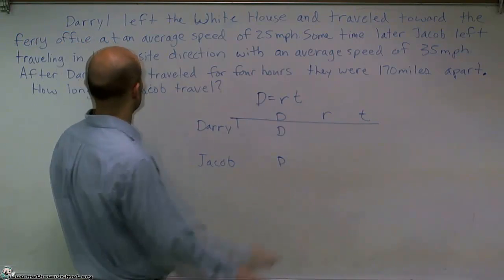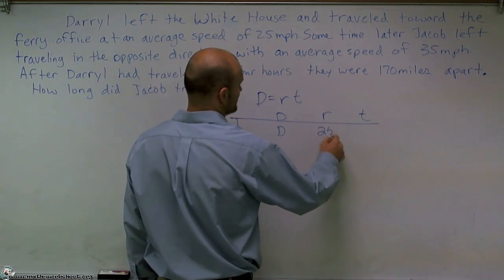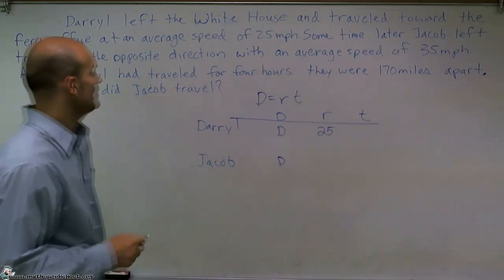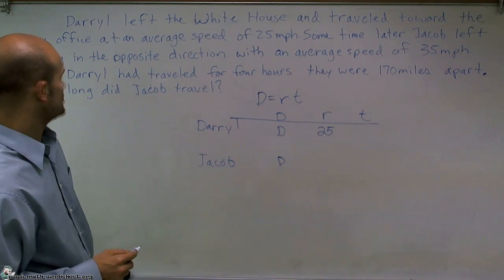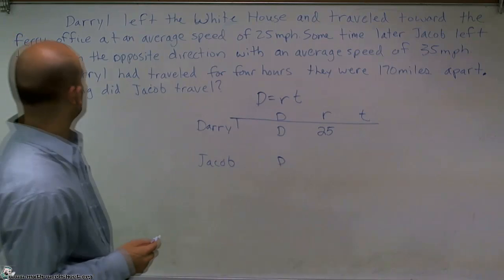The rate for Daryl was 25 miles per hour. And the rate for Jacob was 35 miles per hour.